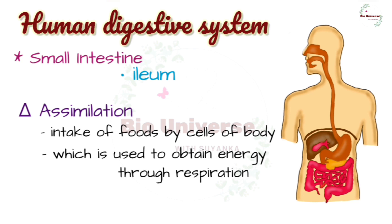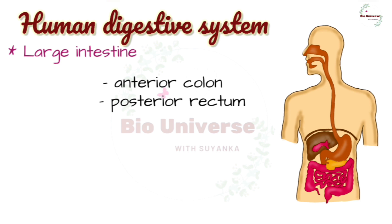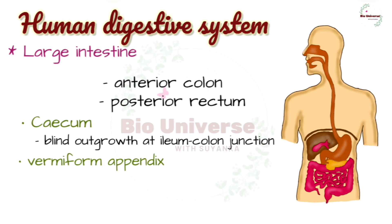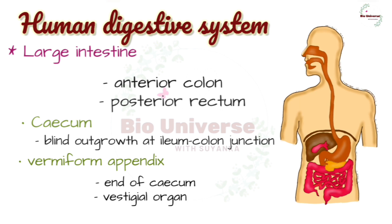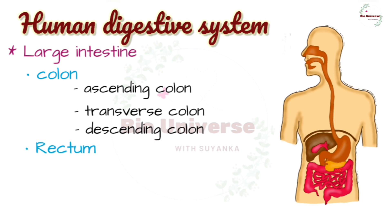Assimilation is the process of intake of digested food by cells. This digested food is used to obtain energy through the process of respiration. The ileum passes undigested food mass into the large intestine, which is divided into two parts: the anterior colon and the posterior rectum. At the junction of the ileum and colon there is a blind outgrowth called the caecum, which contains the vermiform appendix — a vestigial organ. The colon has ascending, transverse, and descending parts. The terminal part of the rectum is called the anal canal, which opens through the anus guarded by sphincter muscles. The large intestine allows the passage of residual food mass — fecal matter — which is ejected through the anus.